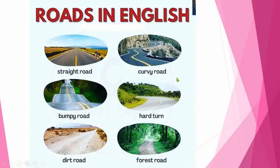So today we learned six types of roads. First is straight road, second is curvy road, third is bumpy road which goes up down up down, then the hard turn or sharp turn, next is dirt road which is called dust or dirt road, and finally the forest road.